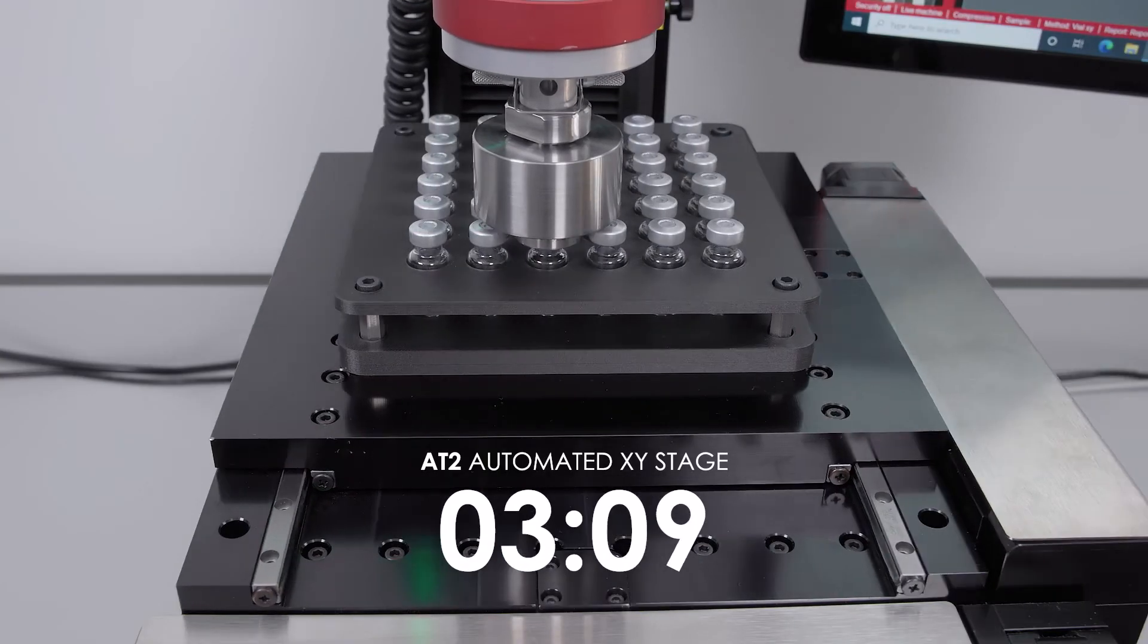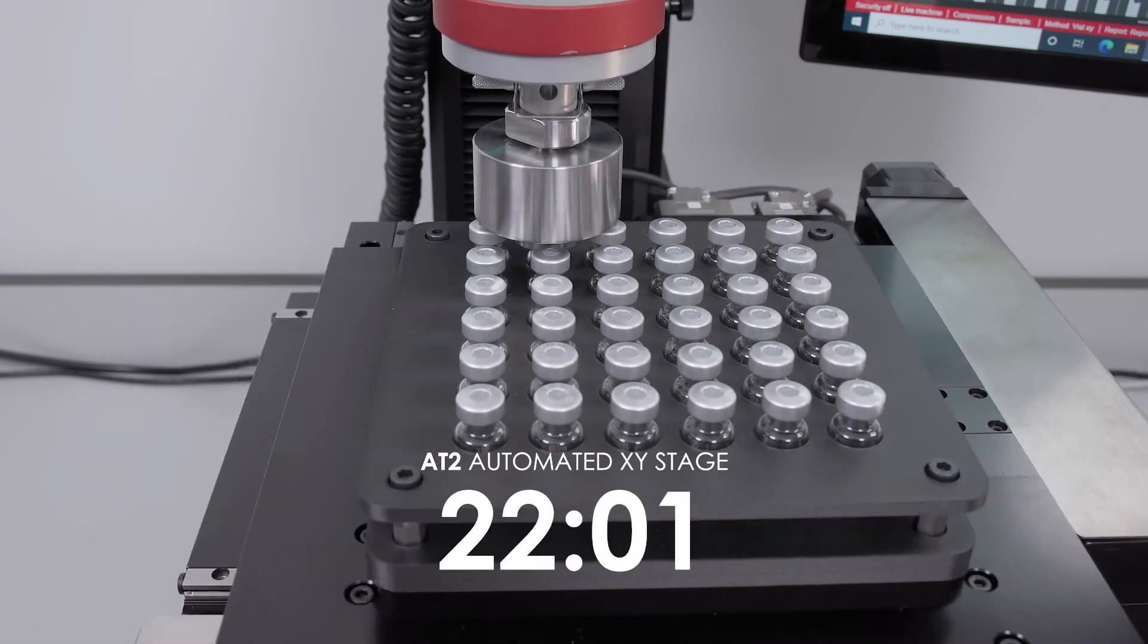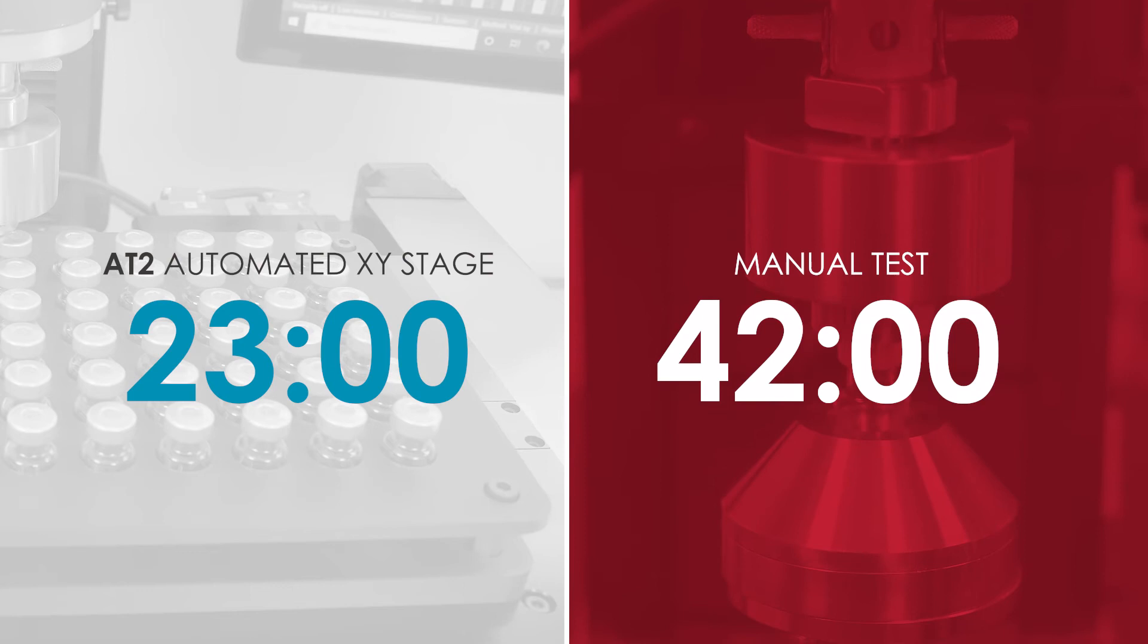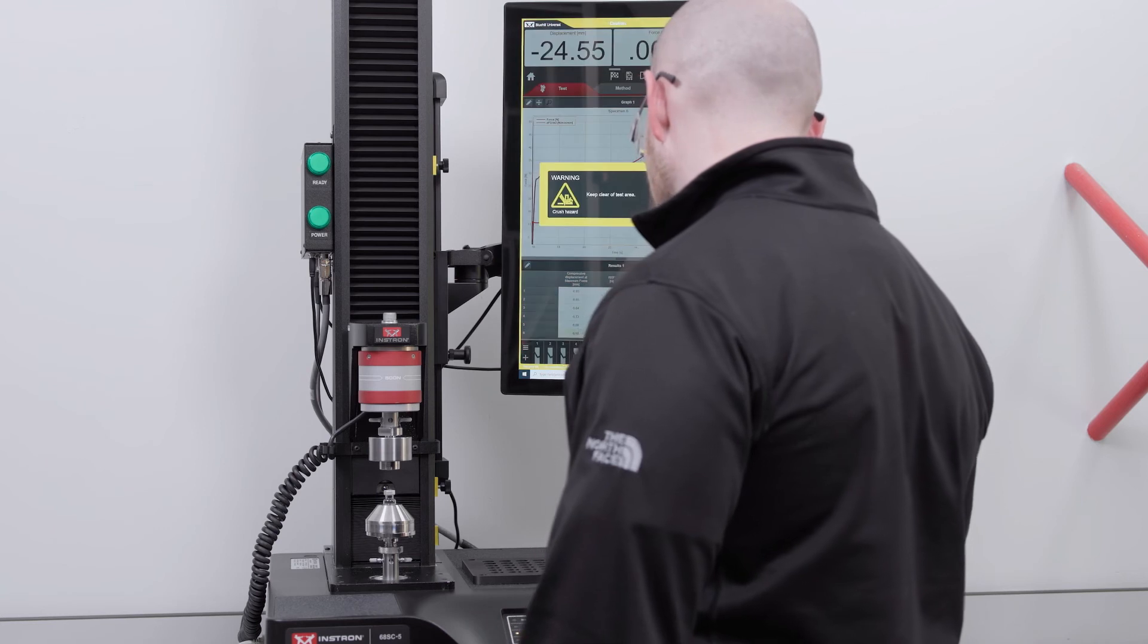In this example, it took 23 minutes to complete testing on all 36 vials. By comparison, it took 42 minutes to manually test all 36 specimens individually, and the operator had to stay by the testing system the entire time.